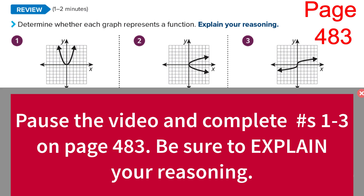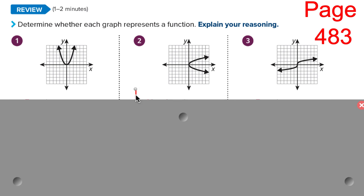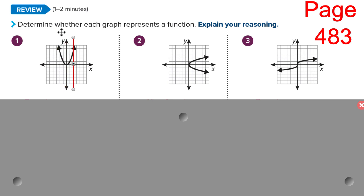So how do we do that again? Is it a function? I'm going to use the vertical line test. You draw a vertical line through the graph at every point, and if it only intersects one time, then it is a function. Number 1 is a function because a vertical line here only intersects the graph one time, which means for every input, or x value, there's only one output, or one y value.